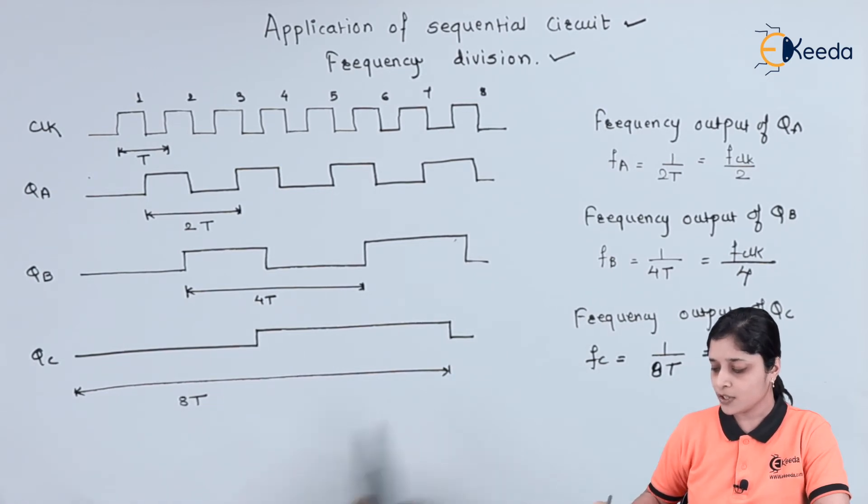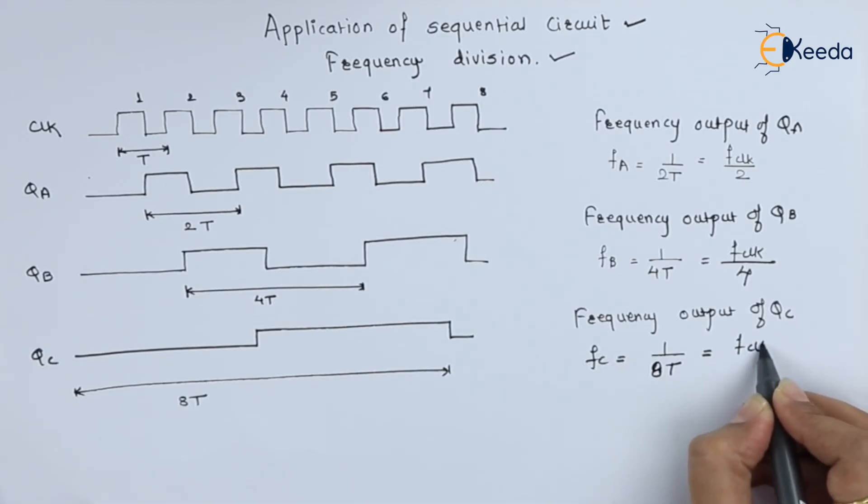Because here total period we get is 8T, so in terms of frequency we can write here F clock by 8.